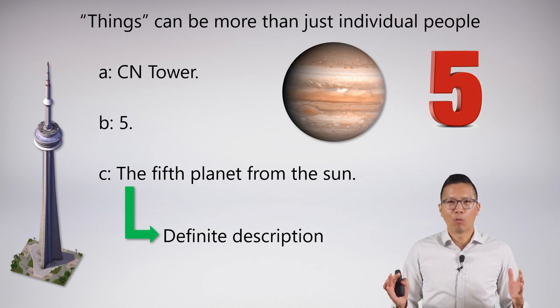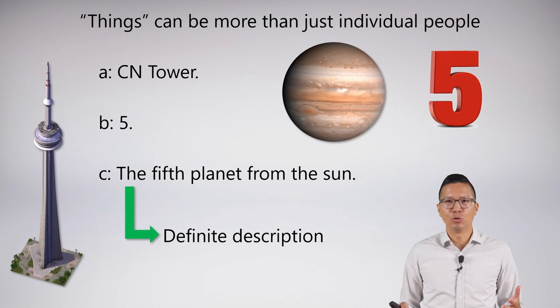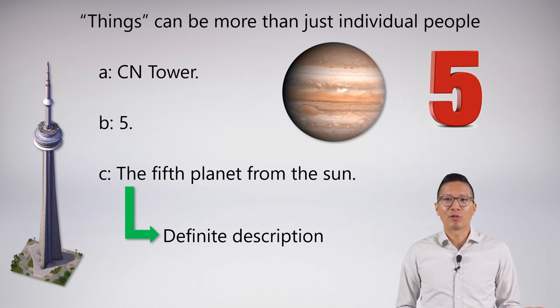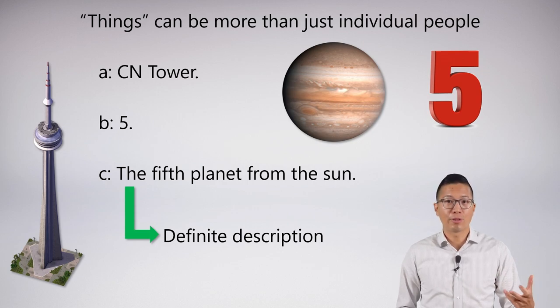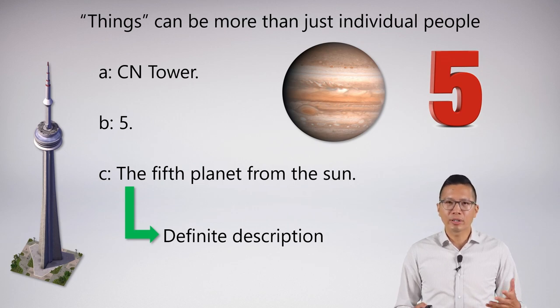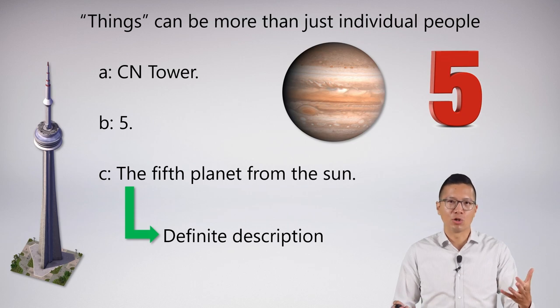Some people might be like, why is 5 a name? Is 5 really an actual individual thing? That's a deep philosophical question. If you're interested in this, you probably have to take philosophy of mathematics, which I happen to teach. Option C here, the fifth planet from the sun, I'm pointing out that we're using the word 'the' to identify an individual thing. This is called a definite description, and we can use that all the time to actually pick out something without naming it with its name in general.